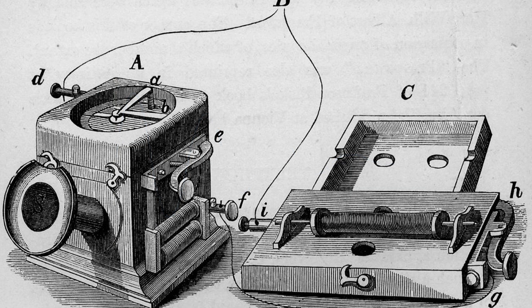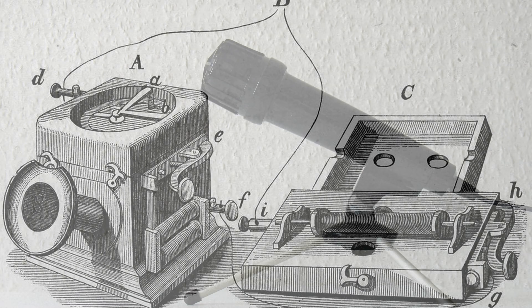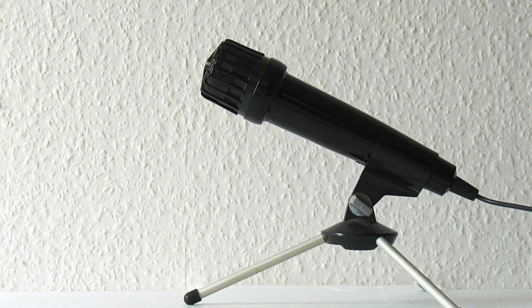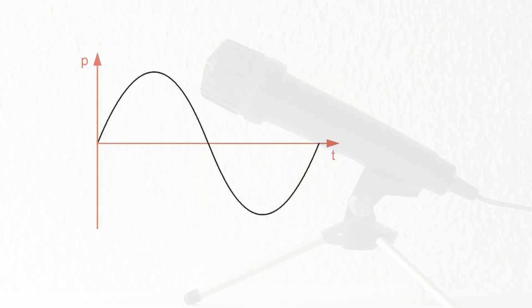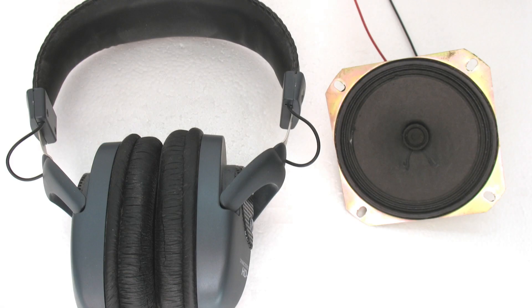That changed with the discovery of the telephone. Now on electric pathways at light speed, information could travel over significantly greater distances. Through a microphone, the pressure waves are turned into an identical electric signal, and a speaker converts these movements again into sound.